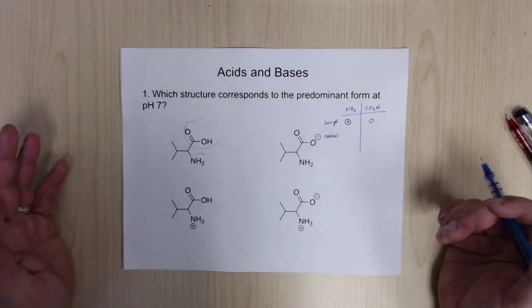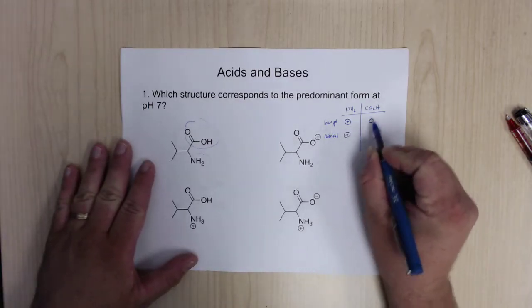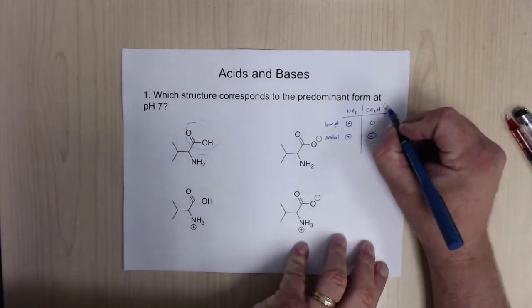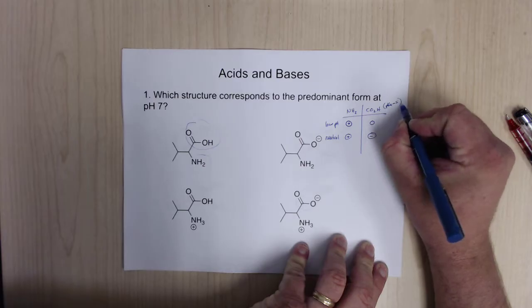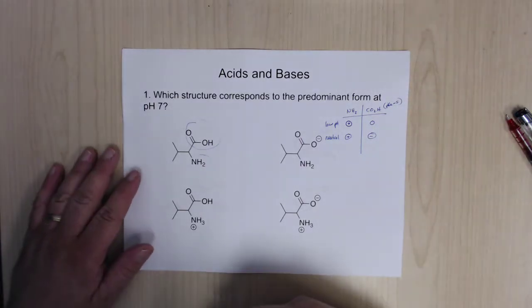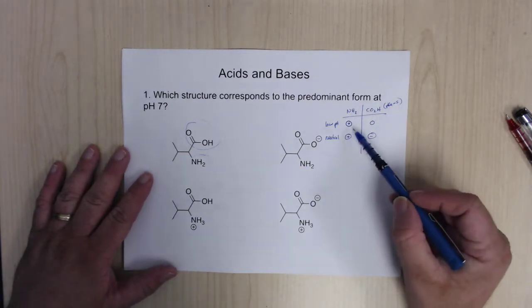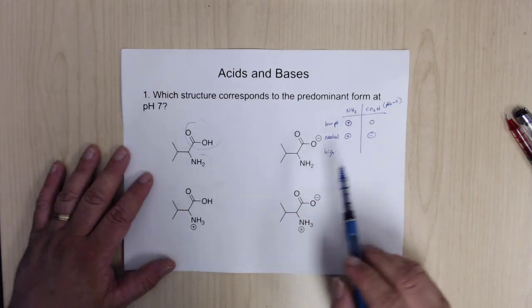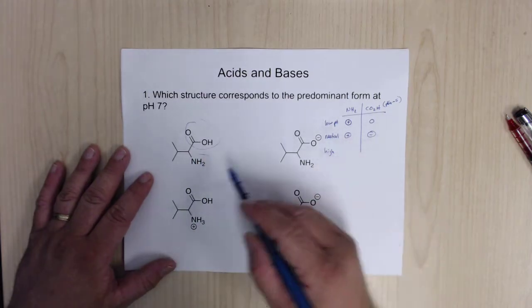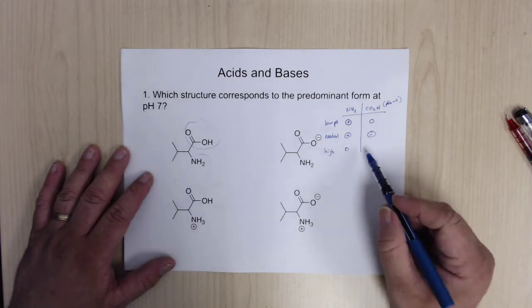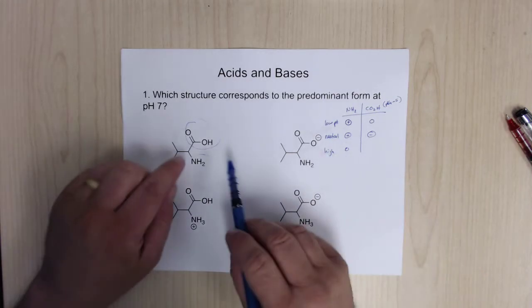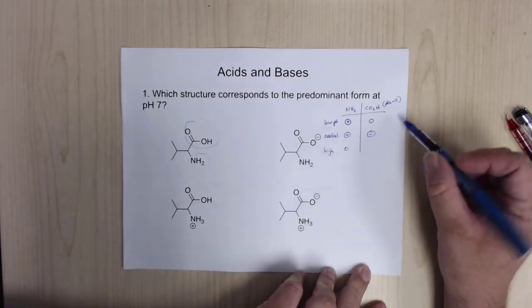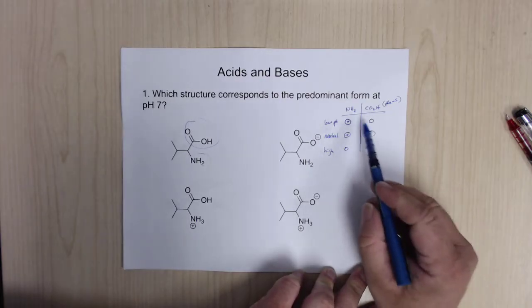At neutral pH, everything's going to be charged because there are only some hydrogens around. The amine is going to be a plus charge and the carboxylic acid is going to be a negative charge, because the pKa of the carboxylic acid is right around five — so above that pKa it's going to be charged, below it, it's not. At high pH, there won't be many hydrogens around, so the amine won't be able to grab one, and the carboxylic acid will still be negative since we're above its pKa.